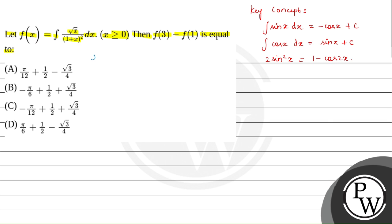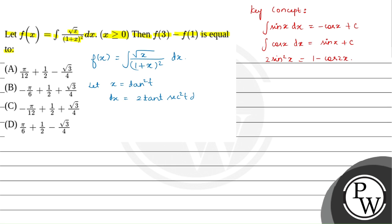Here we have f of x equals integral of root of x divided by 1 plus x squared dx. Let us take x equals tan squared t. Then dx equals 2 tan t times sec squared t dt. Now let us substitute the values — f of tan squared t equals integral of root of tan squared t divided by 1 plus tan squared t whole squared, times 2 tan t sec squared t dt.